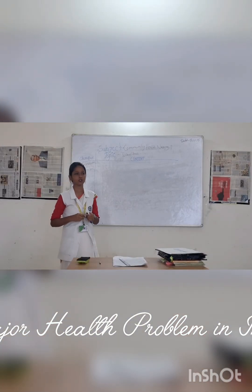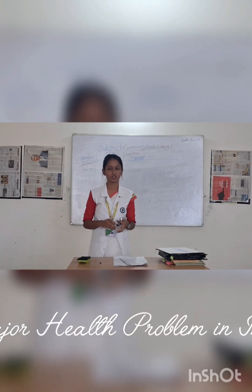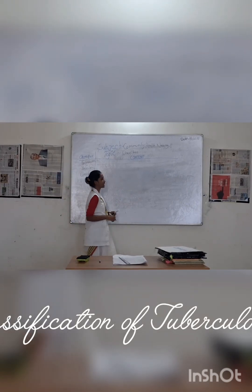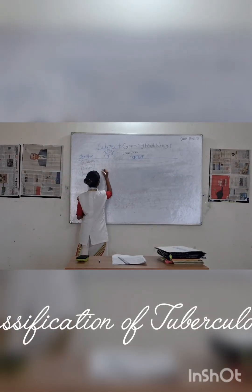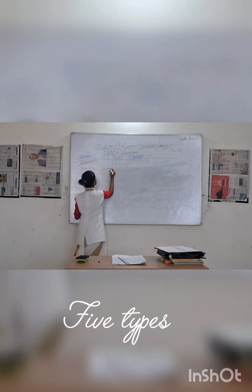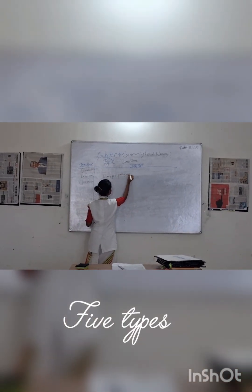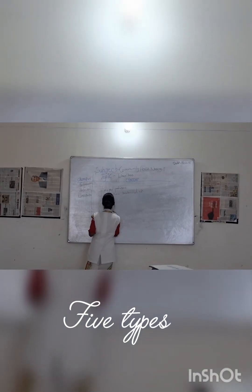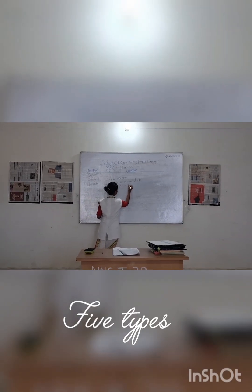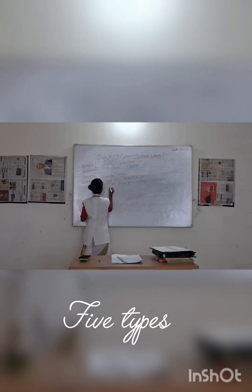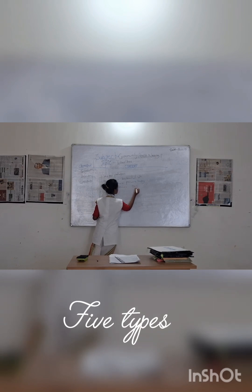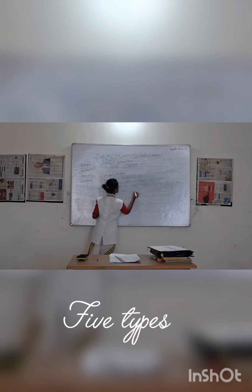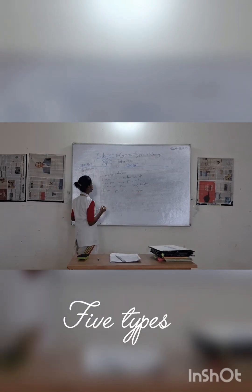We are going to talk about definition, then classification. The classification can be based on: pathogens, anatomical site, previous history, drug resistance, and co-infection. So these are the five types for the classification of tuberculosis.